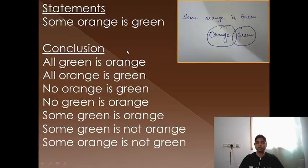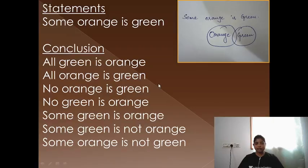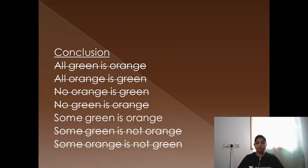Next statement: some orange is green. We draw the Venn diagram showing a partial overlap. It is a particular type and positive type of statement, so all negative conclusions get invalid — options 3, 4, 6, and 7 get invalid. 'All green is orange' is a universal conclusion; since the statement is particular, universal conclusions are invalid — options 1 and 2 get invalid too. 'Some green is orange' is an inverse of 'some' — positive and particular — and it will be a valid answer. So only this fifth option follows.